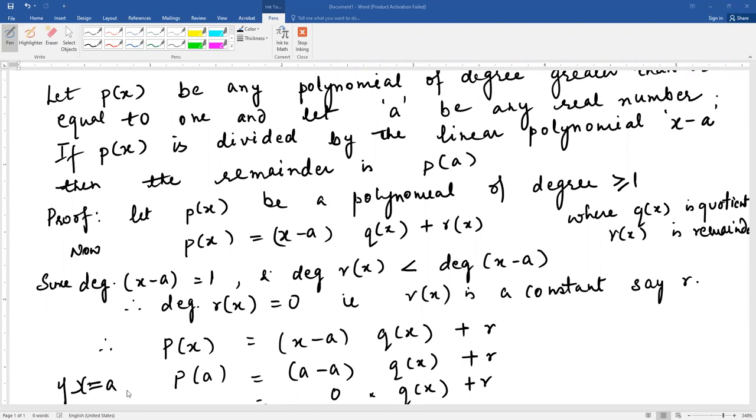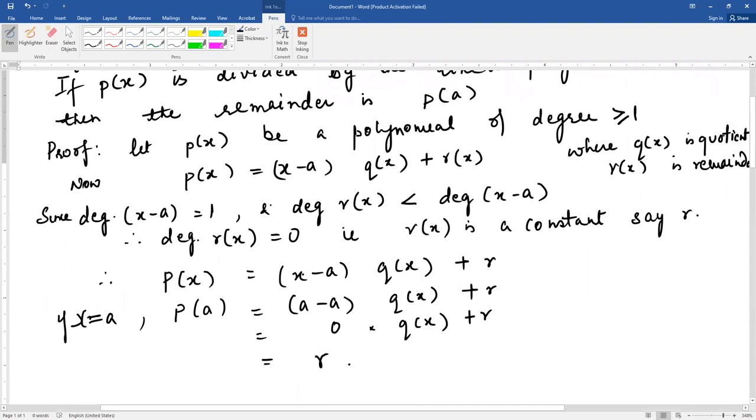So we can write polynomial p(x) when divided by x minus a gives quotient q(x) and remainder r. If x is equal to a, then what is p(a)? We substitute x equals a. p(a) is equal to (a minus a) times q(a) plus remainder r. Now a minus a gives you zero. Zero times quotient, whatever it be, is zero. And zero plus remainder r is r.